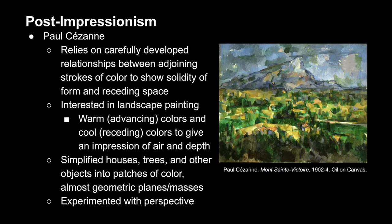Cézanne was another Post-Impressionist who played with perspective and relationships in space. He would emphasize the solidity of a form utilizing broad strokes of color, and was very interested in landscape painting. He often utilized both warm and cool color schemes, using warm colors to advance forward toward the viewer and cool colors to recede backwards, giving the impression of air and depth as well as the illusion of atmospheric perspective. Frequently, he simplified forms like houses and trees into just patches of color, abstracting them into almost geometric planes and masses while still exploring the depth of the space.